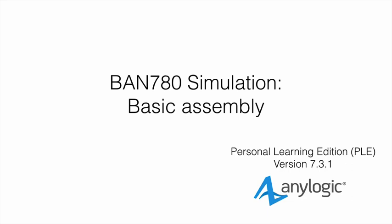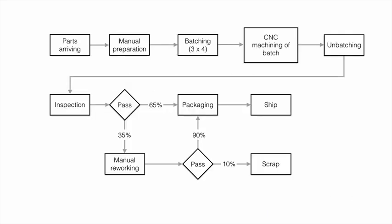The assembly line we talked about during the lecture looks at parts arriving at some random rate, so there's uncertainty. We then need to prepare manually each one of these parts before they are put into a jig of three by four, after which, once the jig is full, it is put into a CNC machine for batch processing. Afterwards it is unbatched again and inspected using go/no-go gauges, at which point only 65% initially passes.